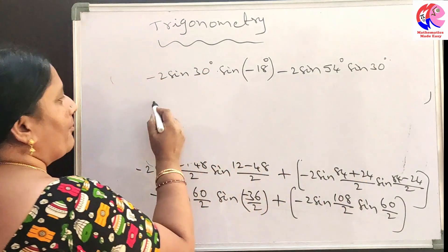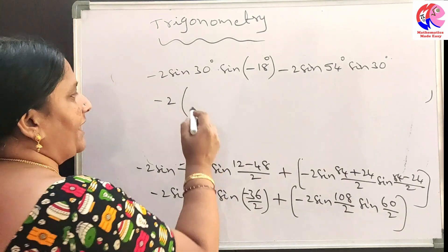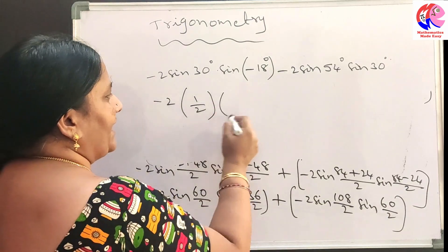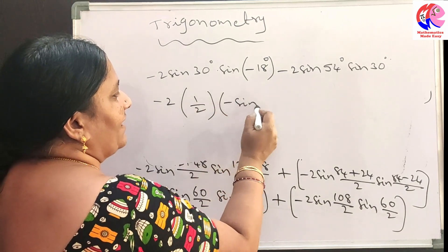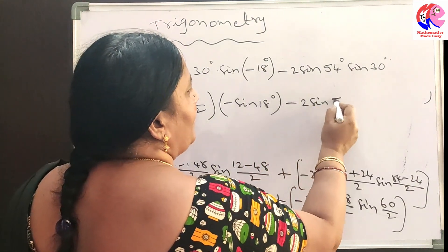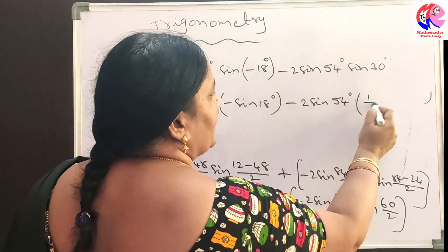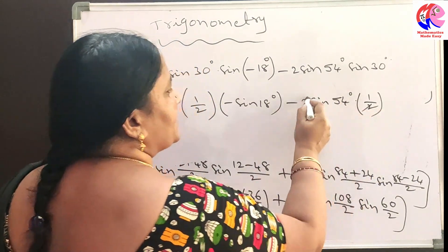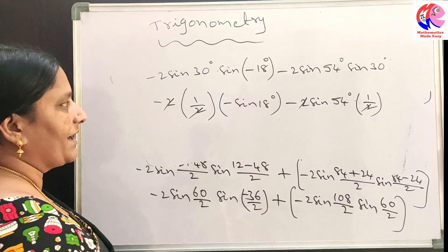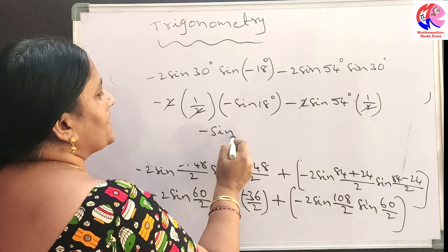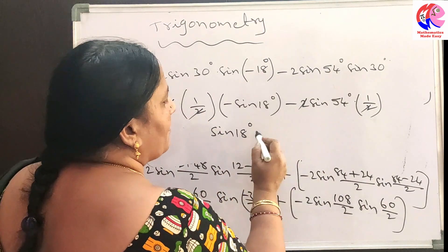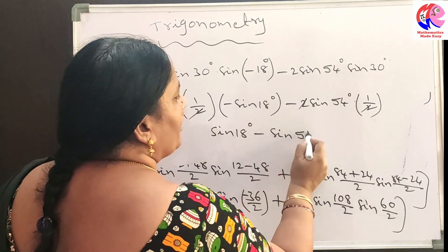After canceling the common sin 84 terms in numerator and denominator, we arrive at minus of minus, which is plus sin 18 degrees, minus sin 54 degrees.